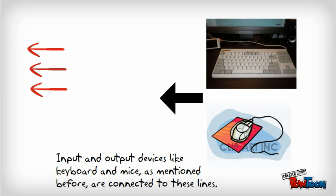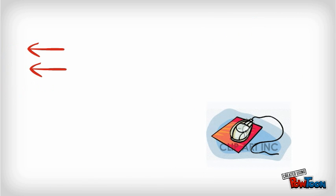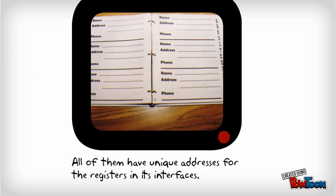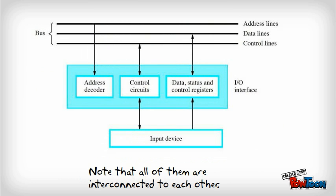Input and output devices like keyboards and mice are connected to these lines. All of them have unique addresses for the registers in its interfaces. This is how a bus looks like. Note that all of them are interconnected to each other in a bus.